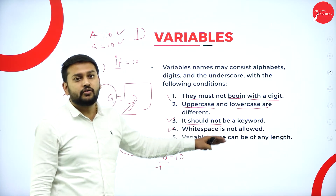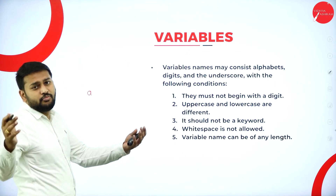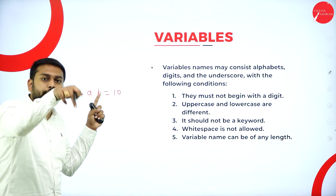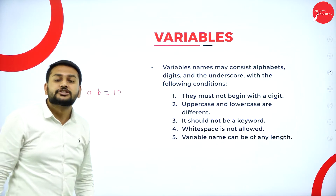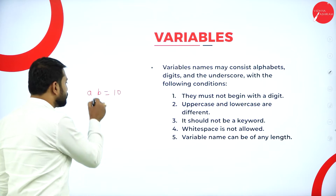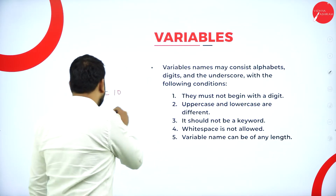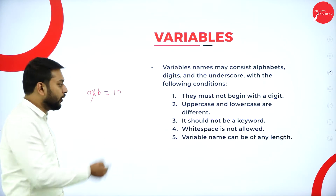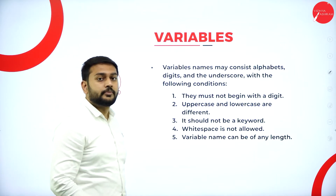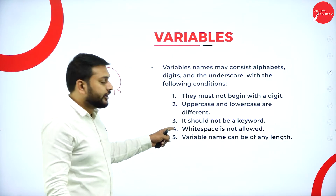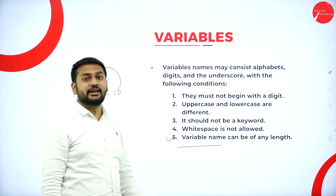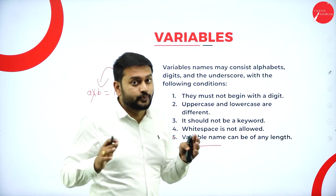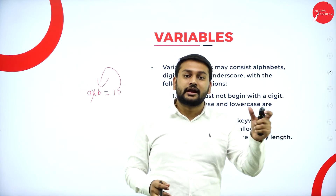The fourth rule: whitespace is not allowed in a variable name. For example, writing 'a b = 10' with a space in between is not valid — it causes confusion for the compiler as to which variable to assign the value. The fifth rule: a variable name can be of any length, so you don't need to worry about length restrictions.